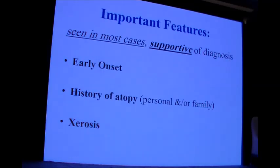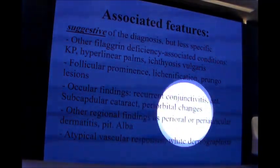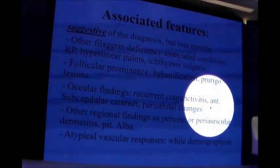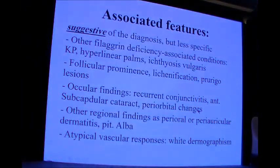The important features supporting the diagnosis are early onset of the disease, personal or family history of atopy, and xerotic skin. The associated features include atypical vascular responses such as white dermographism due to vascular constriction, and ocular findings like recurrent conjunctivitis, anterior subcapsular cataract, and periorbital changes.